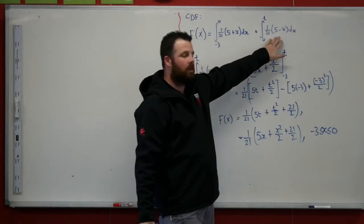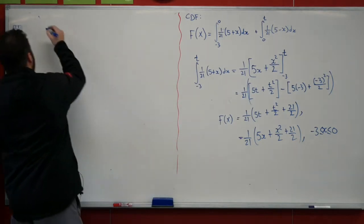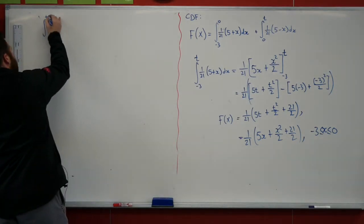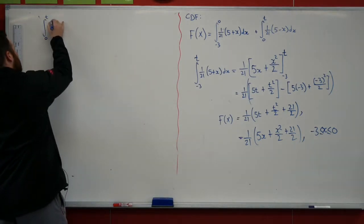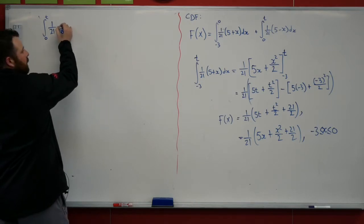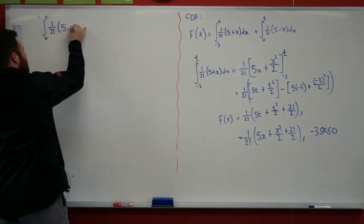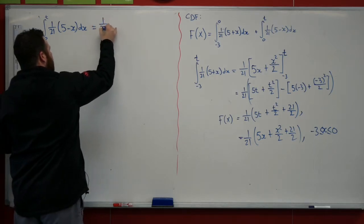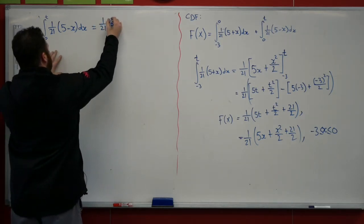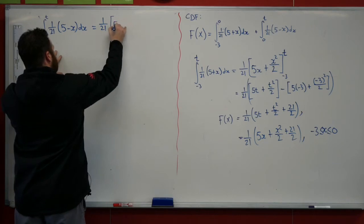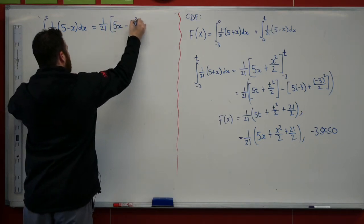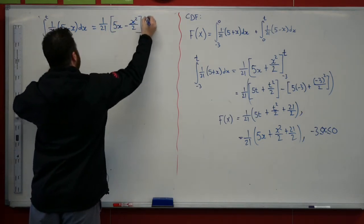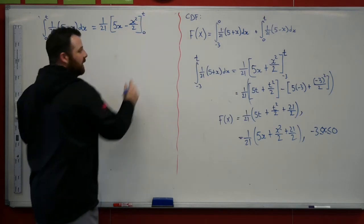Let's now evaluate the second one. So the integral between t and 0 of 1 on 21 outside of 5 minus x with respect to x is going to be 1 on 21 out the front of that. We know that that becomes 5x minus x squared over 2.